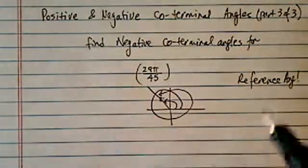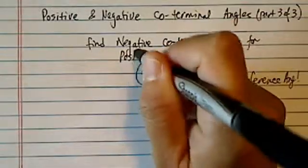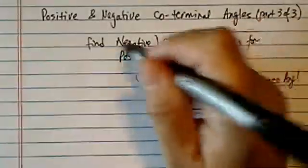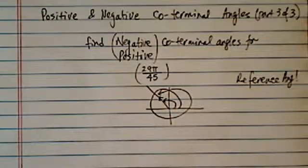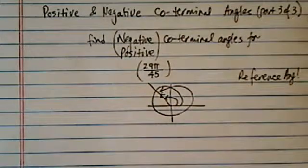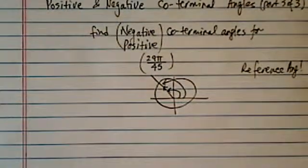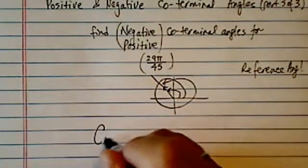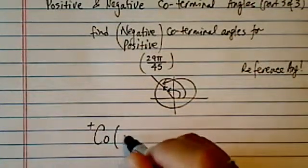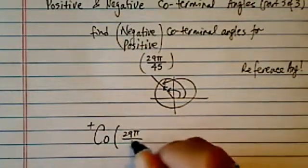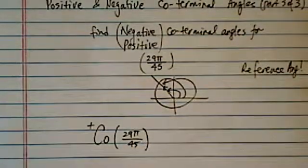So as a matter of fact, I think what I'll do is I'll find both positive and negative coterminal angles here, so you have an idea, a flavor of how easy it is. Math is not hard, and we don't have to make it hard.